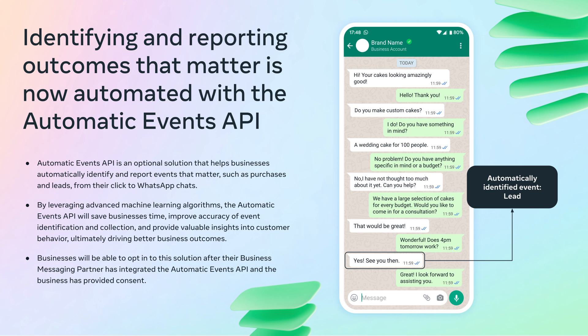To get started, you need to opt into this solution and instruct Meta to identify automatic events. Let's look at a practical example. Imagine a customer initiates a chat about ordering a custom cake. As the conversation progresses, the API automatically identifies a lead event when the customer expresses interest in a consultation. This automation streamlines the process, allowing you to focus on what you do best — serving your customers.